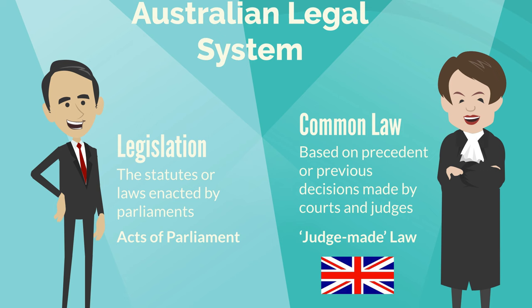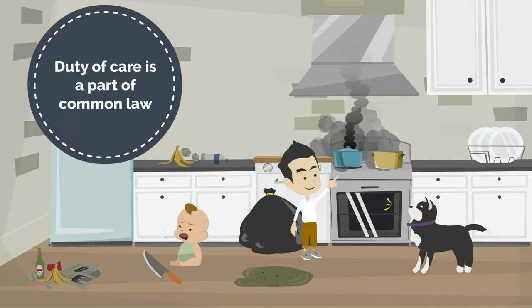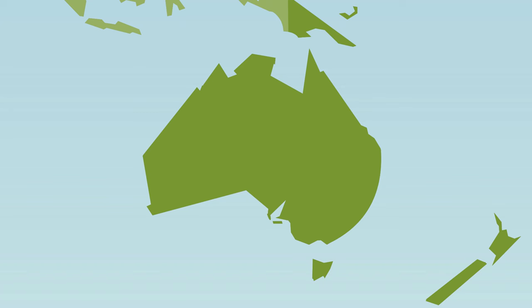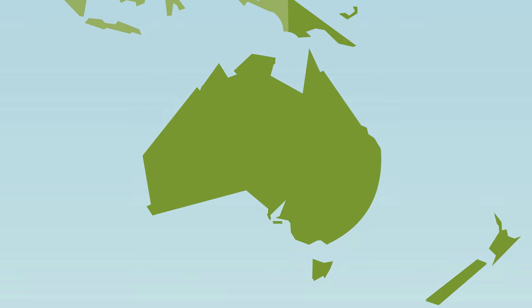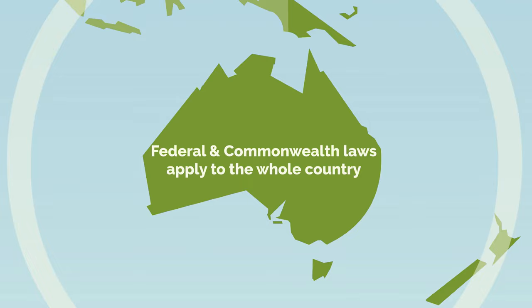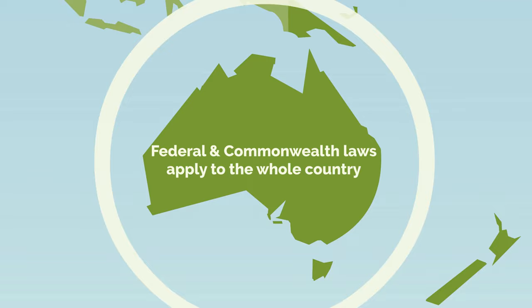Common law is sometimes called judge-made law. Australian common law was inherited from English common law and later extended by decisions made in Australian courts. Duty of care is a part of common law — that is, there is no duty of care act. Because Australia is a federation of states and territories, each of which has its own parliament, there may be different laws in different states and territories.